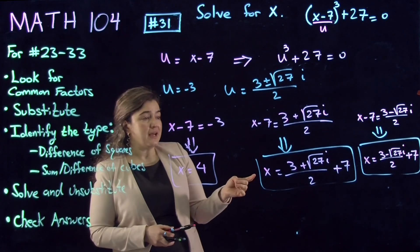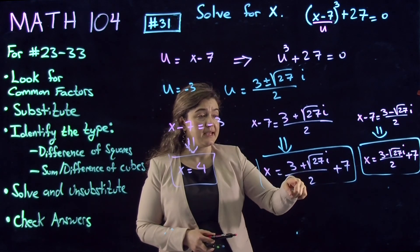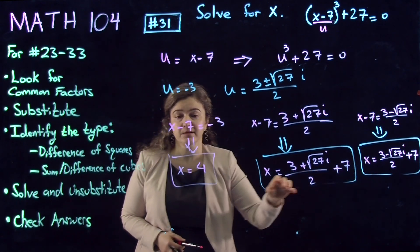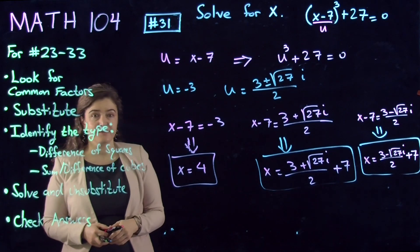You don't have to simplify for a gateway exam. You can leave it as it is. So there are three solutions to that equation, and I'm done.